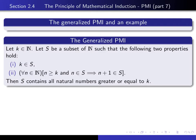Some sets S have the property that they don't consist of all natural numbers, but they consist of all natural numbers bigger than a particular natural number — for example, all natural numbers from 5 on up. The generalized principle of mathematical induction gives us a technique for predicting when a set S has that property.